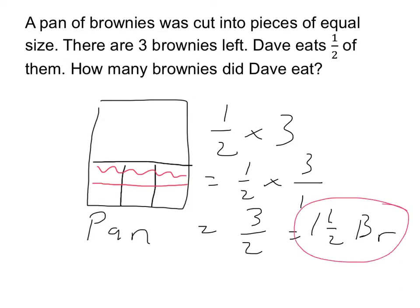We ate one and a half brownies. From the picture we could have seen that answer. Our picture justifies that this is indeed solved by multiplication of fractions, because we did something with a half of those three brownies.